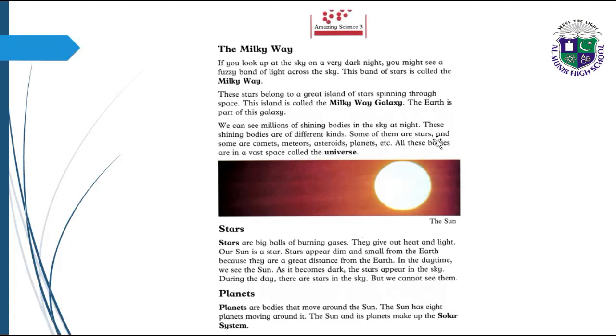We can see millions of shining bodies in the sky at night. These shining bodies are of different kinds. Some of them are stars, and some are comets, meteors, asteroids, planets, etc. All these bodies are in a vast space called the universe. Stars are big balls of burning gases. They give out heat and light. Our sun is a star. Stars appear dim and small from the Earth because they are a great distance from the Earth. In the daytime we see the Sun. As it becomes dark, the stars appear in the sky. During the day there are stars in the sky, but we cannot see them.